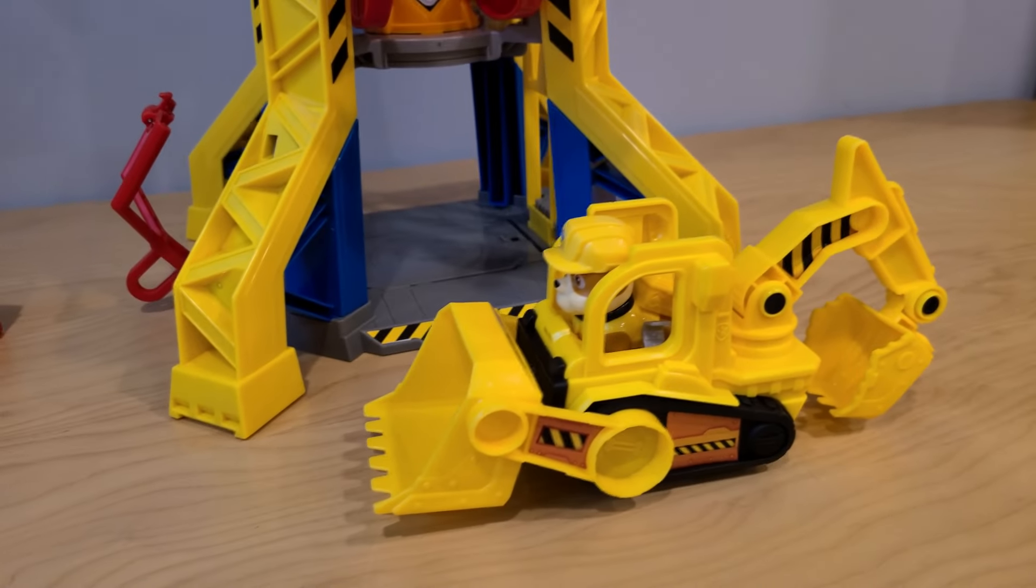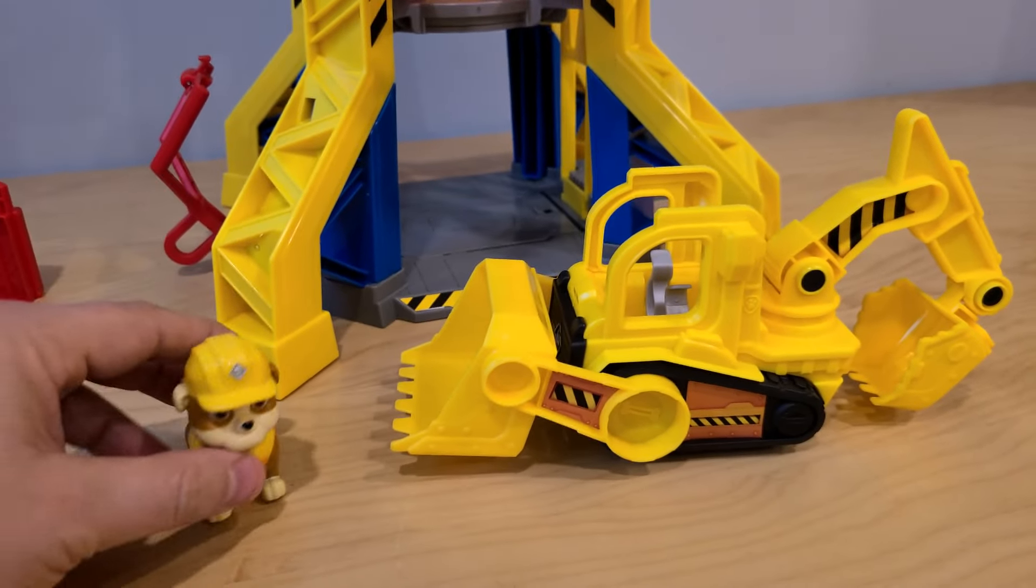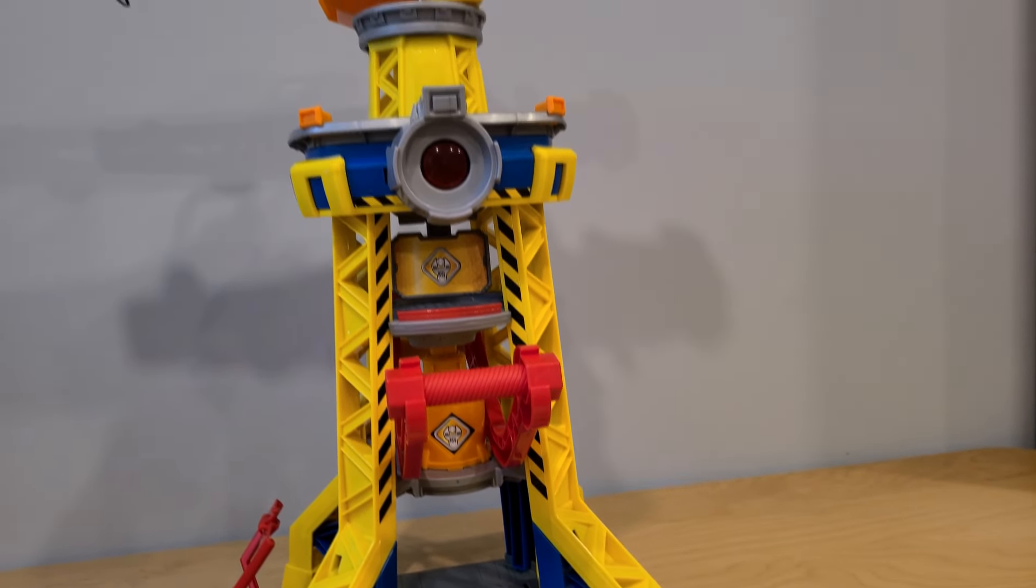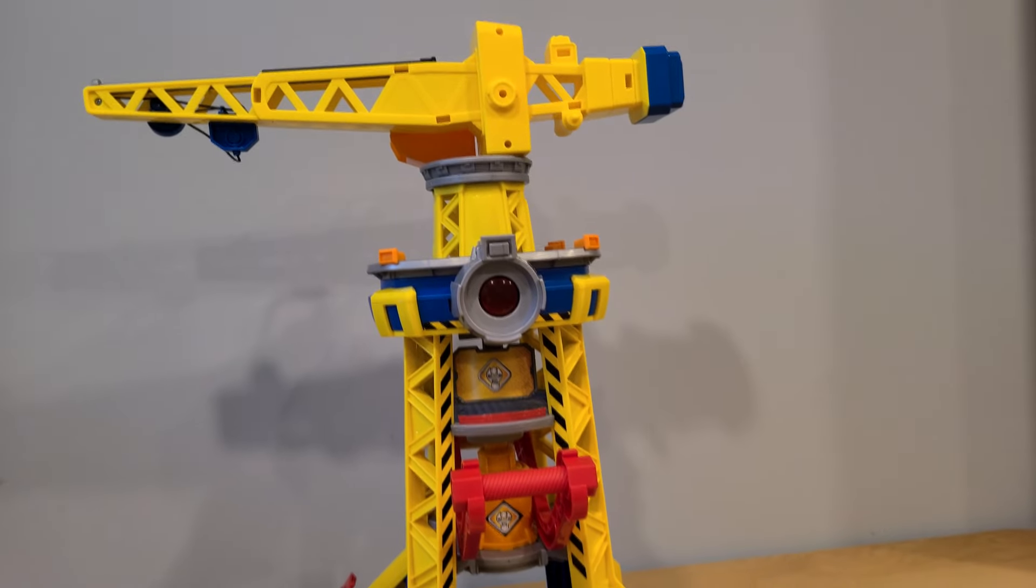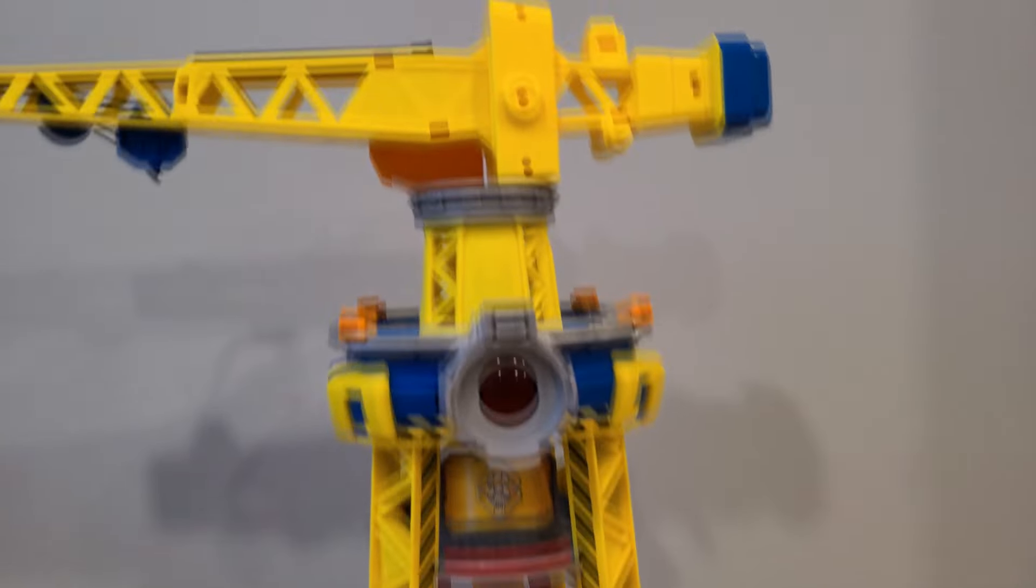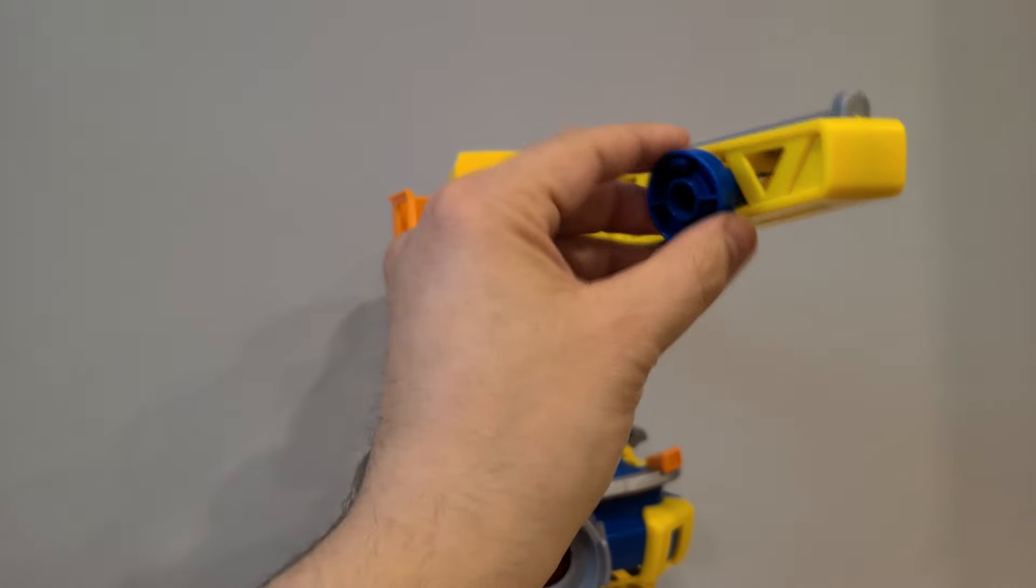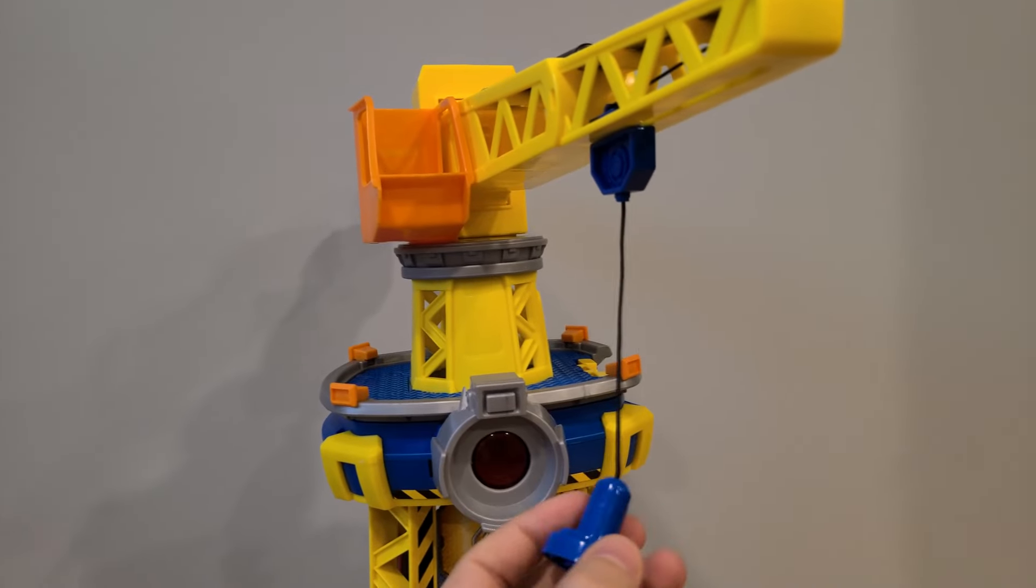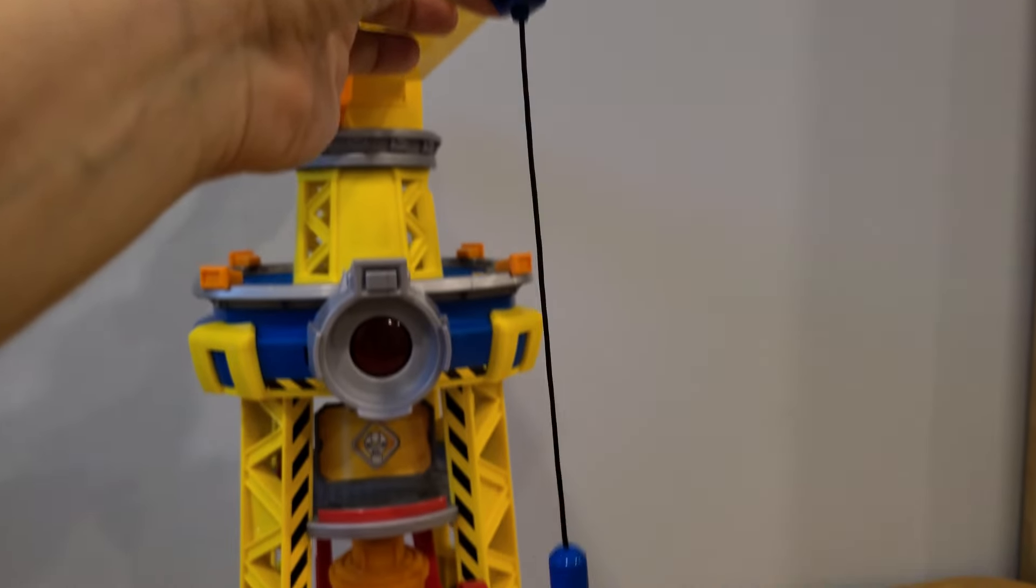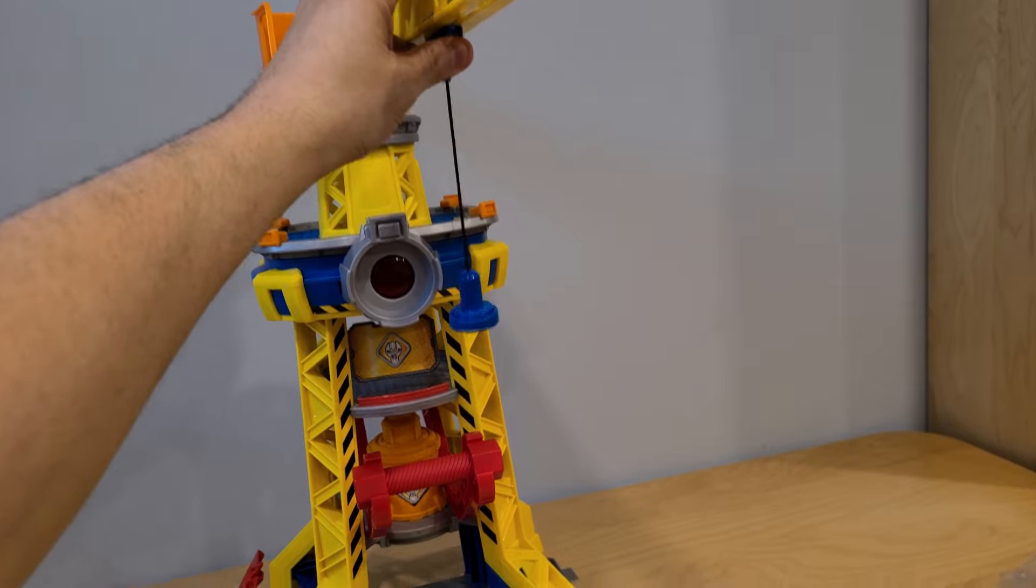At this point, our set is complete. So here we have Rubble and his vehicle, a bulldozer, and in the background is our crane. Check this out. This is a really, really big crane. So up here on top, we can turn it. And we have two attachments that we can use. If we move this forward, this lowers. You see, it goes down. And then if we move it back, it goes up.